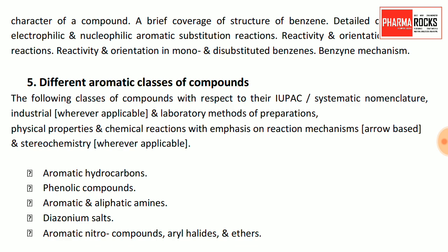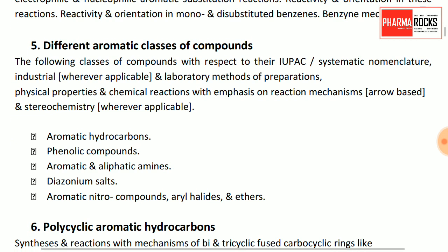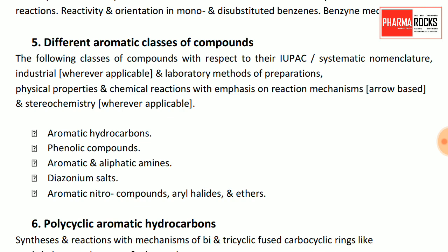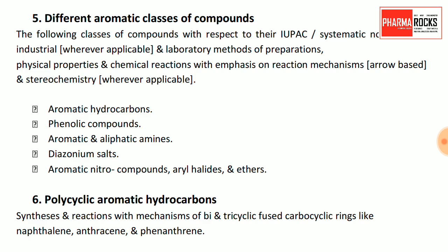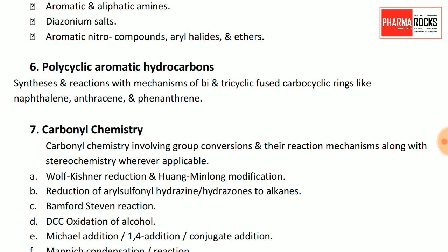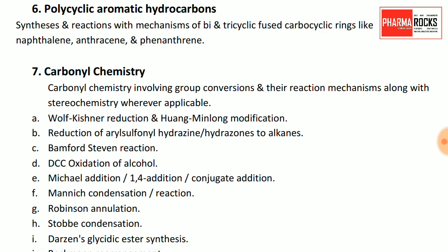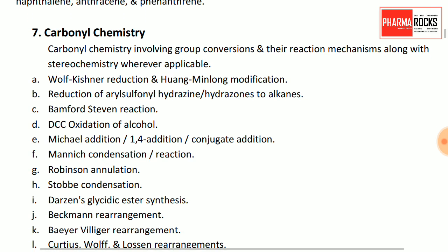Electrophilic and nucleophilic aromatic substitution reactions are very important in organic chemistry. Different aromatic classes include aromatic hydrocarbons, phenolic compounds, aromatic and aliphatic amines, and diazonium salts. Then polycyclic aromatic hydrocarbons — their synthesis and ring systems like naphthalene, anthracene, and phenanthrene.